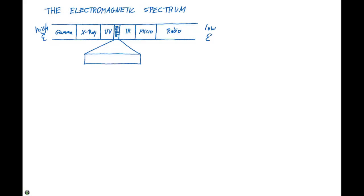It's given in this spectrum right here. Starting with the left, we have gamma rays, then x-rays, ultraviolet rays, visible radiation, infrared, microwaves, and radio waves.